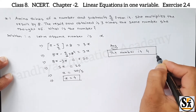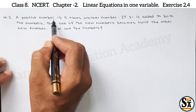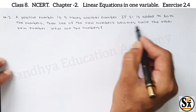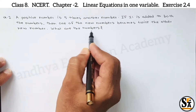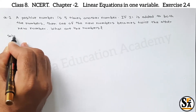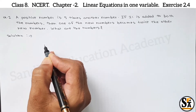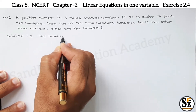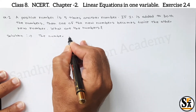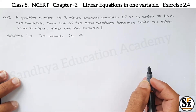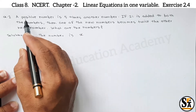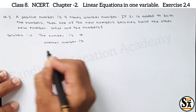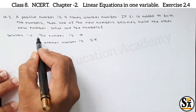Now see the next question. Question number two: one positive number is 5 times another number. If 21 is added to both the numbers, then one of the new numbers becomes twice the other number. What are the numbers? To start the solution, we will assume something. Let the number be x. This is our first assumption. Given the positive number is 5 times another number, another number is 5x. This is our second assumption.